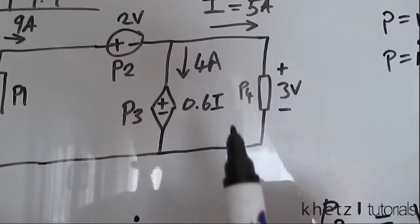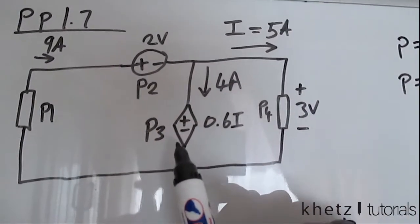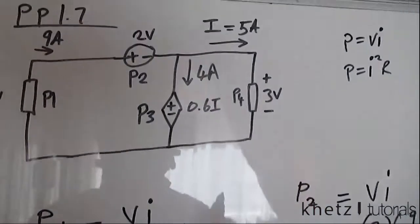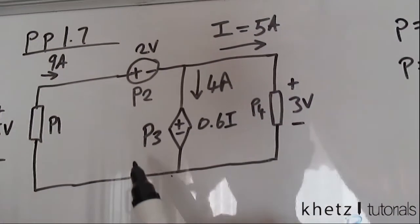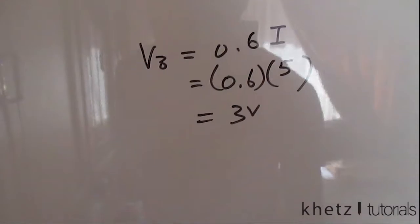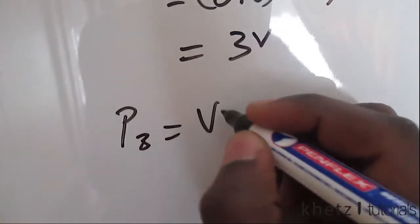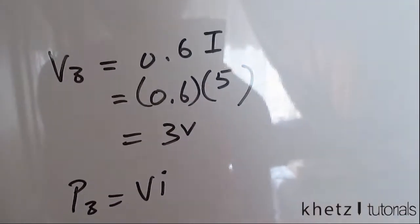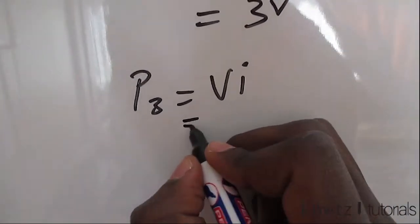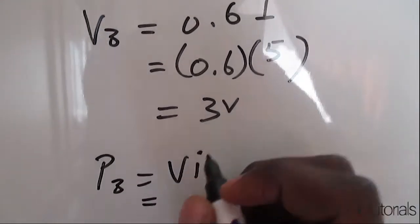Now coming to the question or answering the question, you want to find P3. So we're going to say P3 equals to VI. So V is this value which we just calculated here.